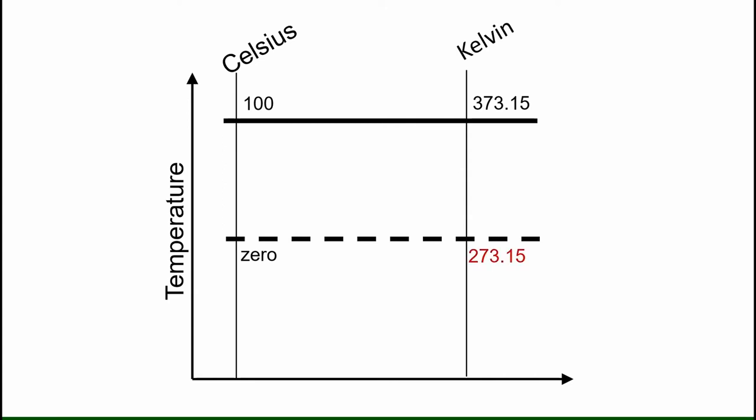Similarly for when water is boiling we add 273.15 to 100 to get 373.15 Kelvin. But the difference in temperatures is still 100 irrespective if we are using degrees Celsius or Kelvin.